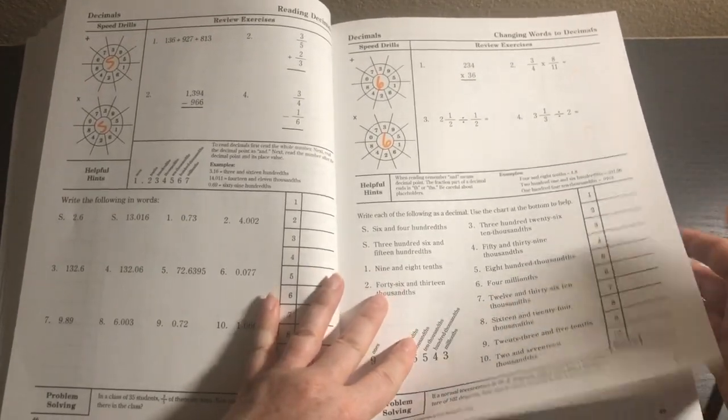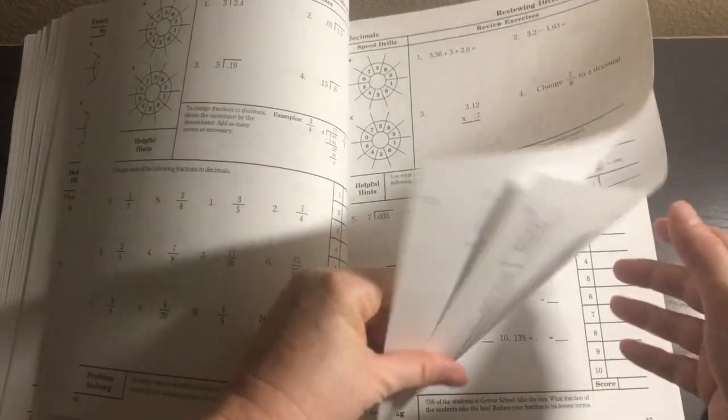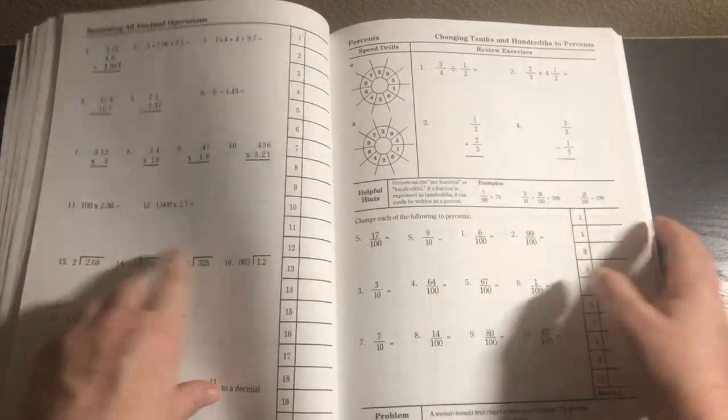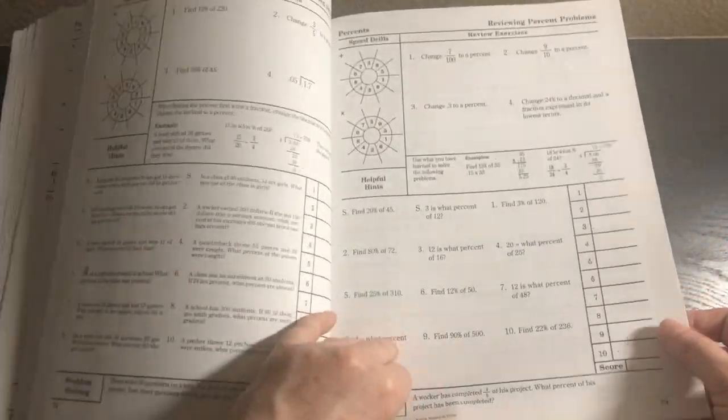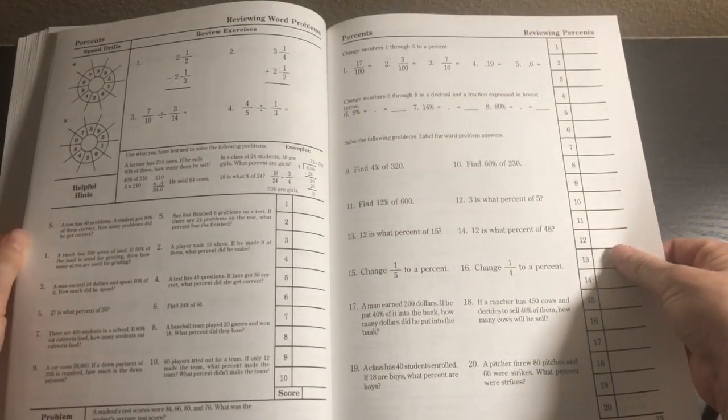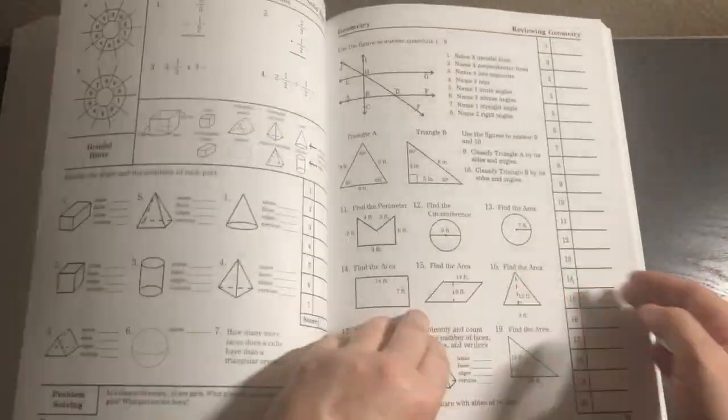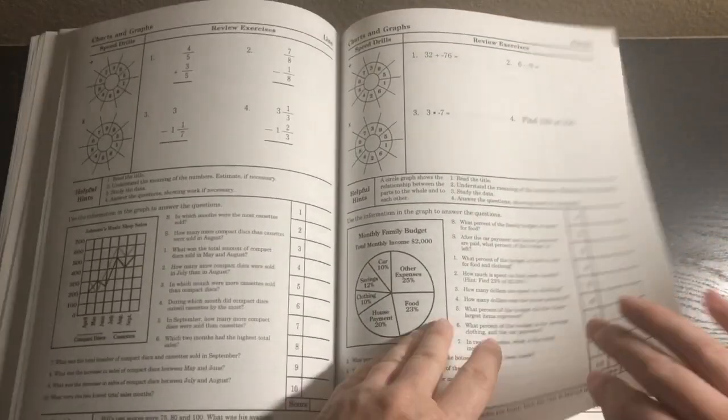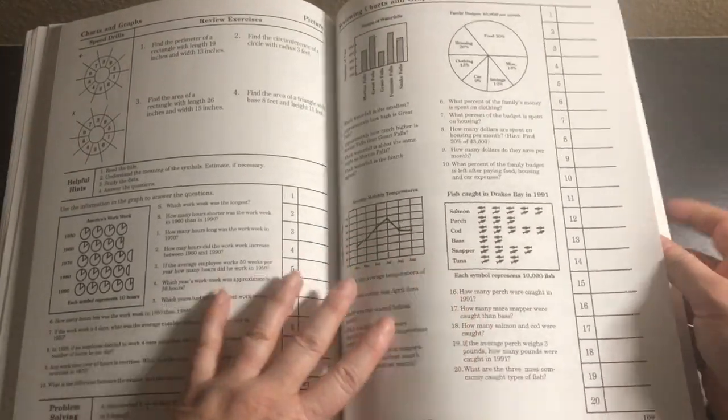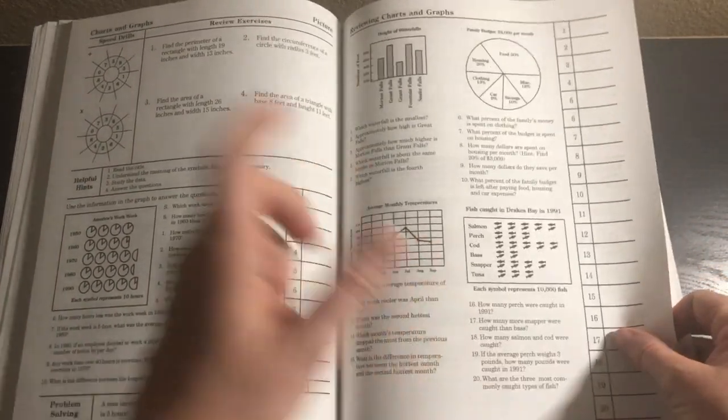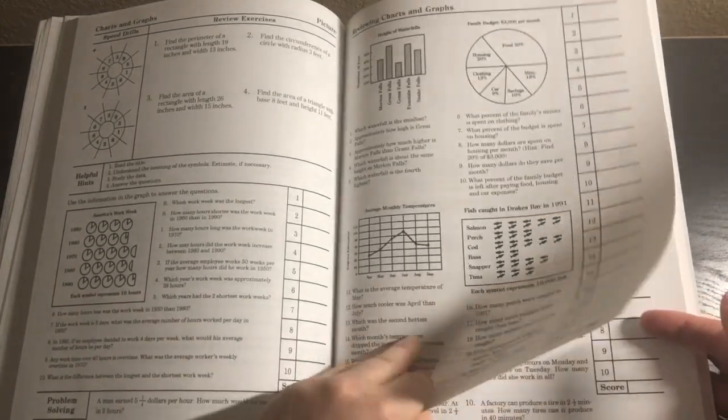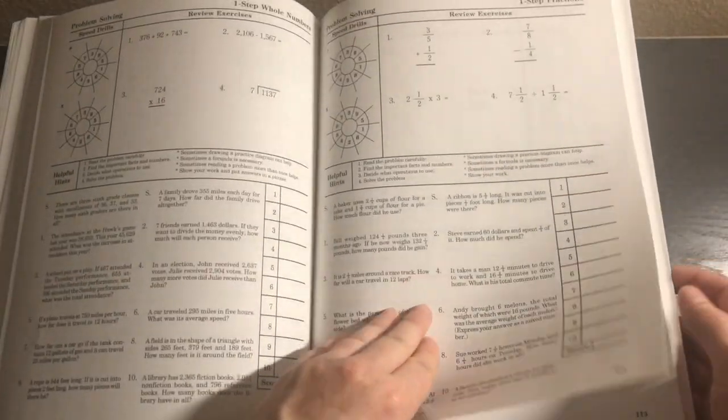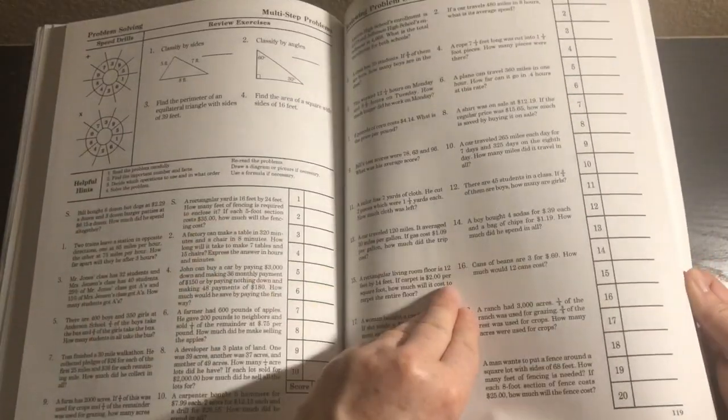Then we get into decimals with the same format. We have reviewing all decimal operations, then percents, reviewing percents, geometry, reviewing geometry, integers, reviewing integers, charts and graphs. Those have more problems - 20 - but it's really not more than they're doing on a regular day. It's just they don't have the speed drills and review, it's just all review to show they've mastered that content. Then we've got problem solving and review for problem solving.